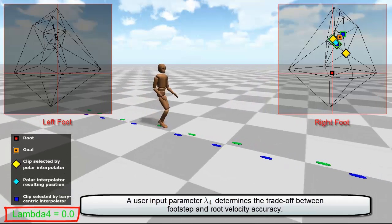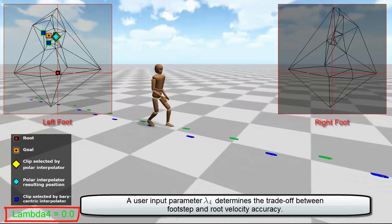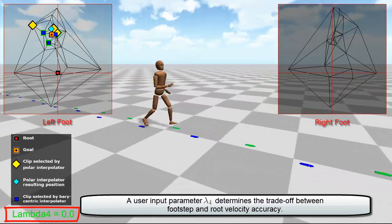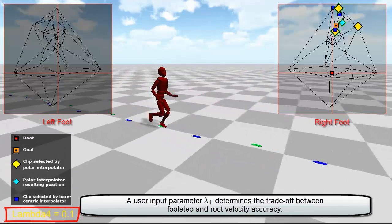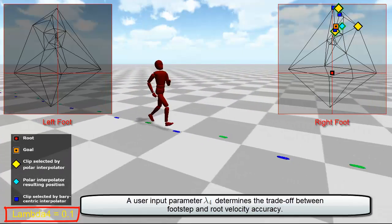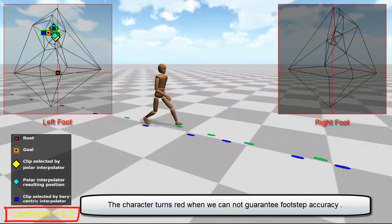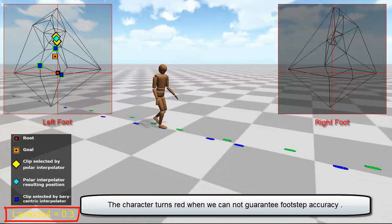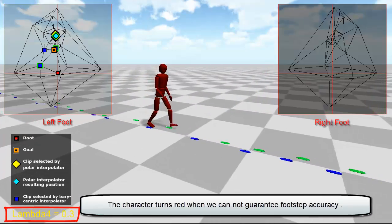The input parameter lambda 4 determines the trade-off between following footsteps accurately when lambda 4 equals 0, and simply following root movement when lambda 4 equals 1. As lambda 4 increases, it is more difficult to find a solution that guarantees correct foot landing. In this video the character turns red in those circumstances.